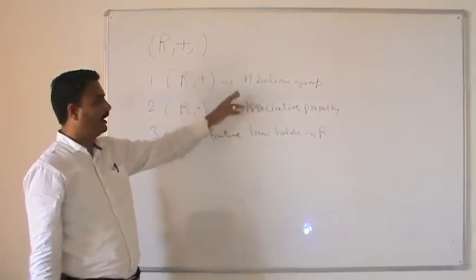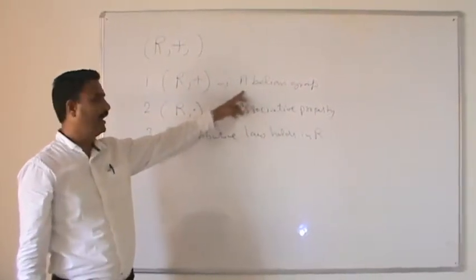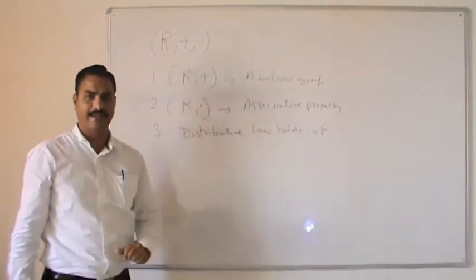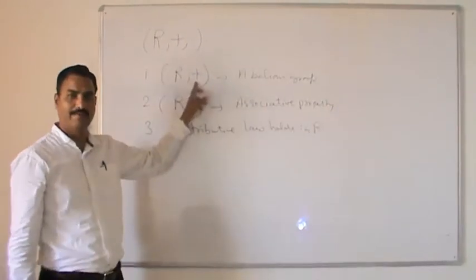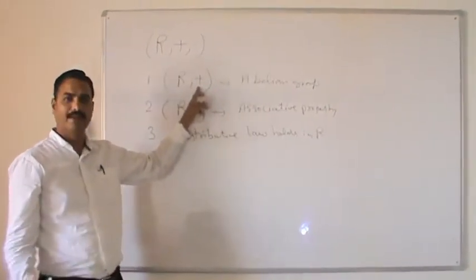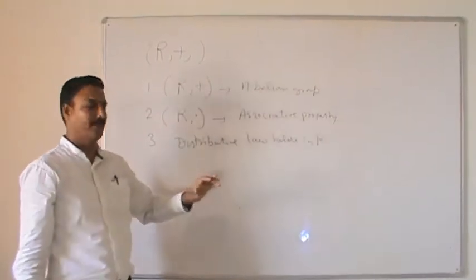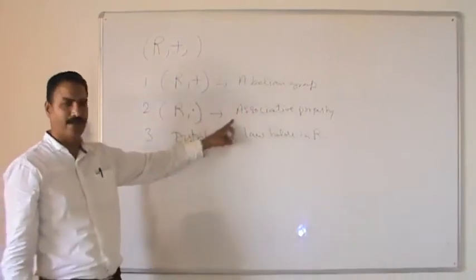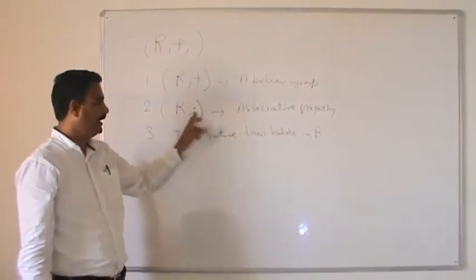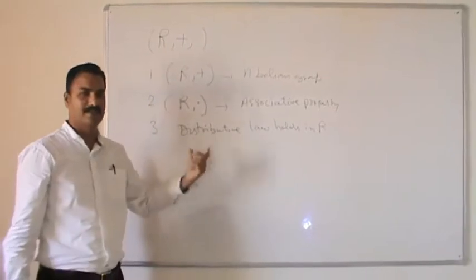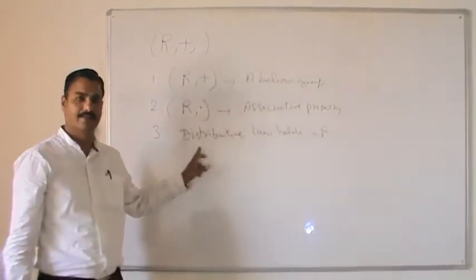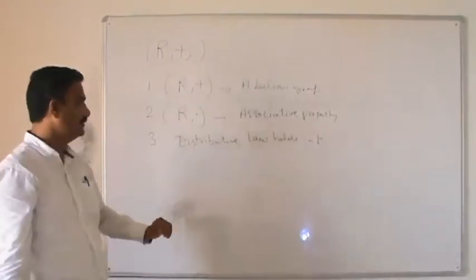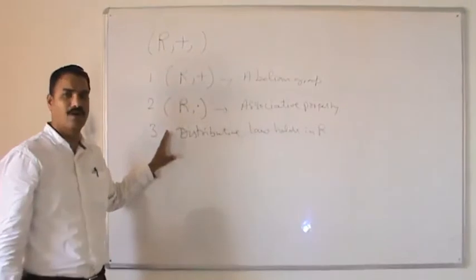The first property required for a ring is that R must form an abelian group for the additive operation, which means R must possess an identity element, closure property, associative property, inverse property, and commutative property — all five properties for additive operation. Just one associative property for multiplicative operation. And the third property is the distributive law: R must possess left and right distributive law. So any non-empty set with these three properties is called a ring.